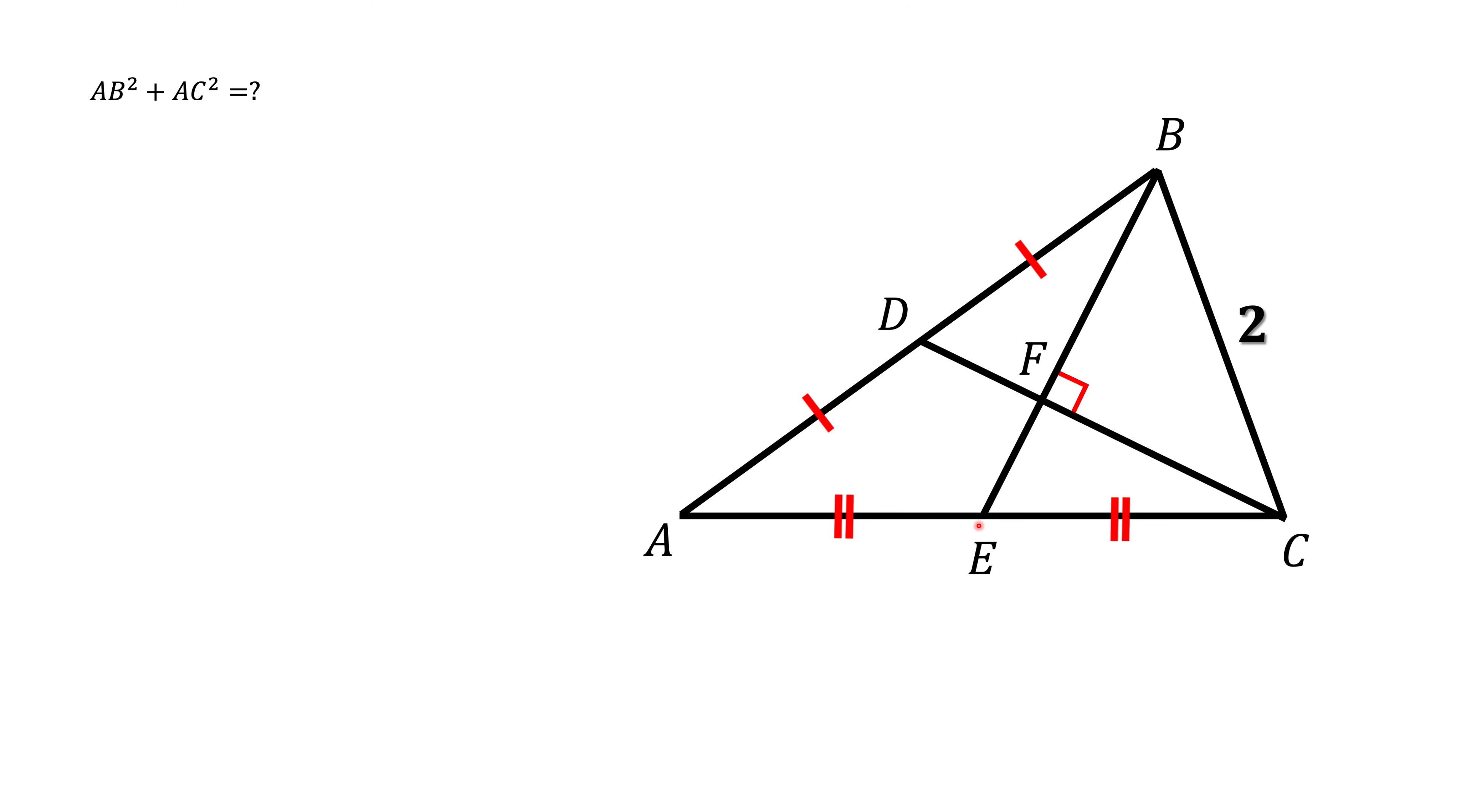Since D and E are midpoints of two sides of the triangle, DE is a midline of the triangle, and we know the property of midline, that it is parallel to the side BC, and also equal to the half of it, so DE should be equal to 1.